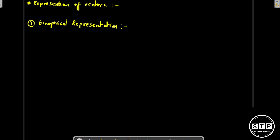In the case of graphical representation, we will use an arrow to denote the vector. When we take an arrow, there are two sides: one is the tail of the arrow and the other part is known as the head of the arrow. When we denote a vector, it should contain the magnitude and direction. The arrow's direction will give us the direction of the vector, and the arrow's direction is from tail to head.